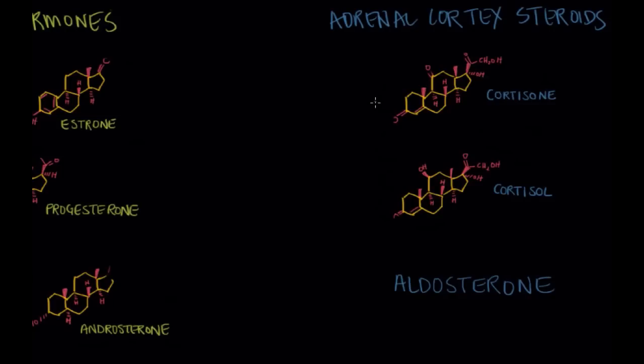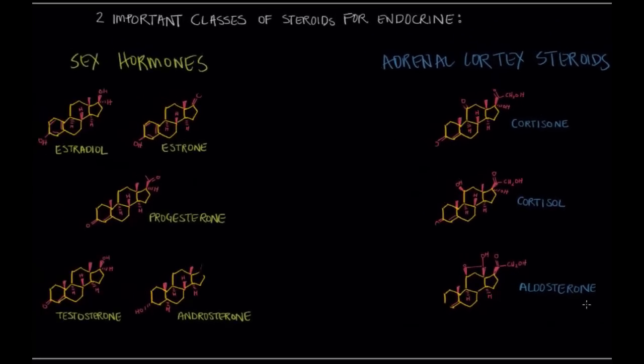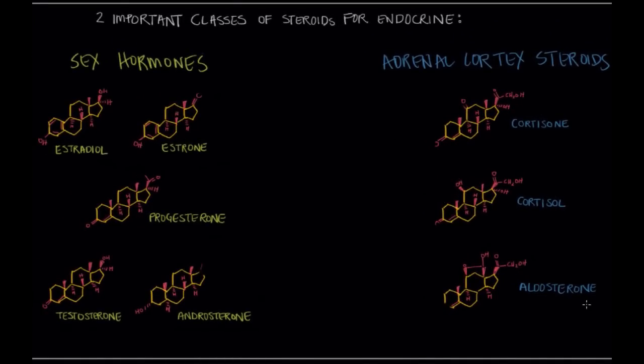And then we also have aldosterone. And aldosterone is one of the main hormones that regulates our body's blood pressure and the fluid volume. And so I hope all these images make steroids a little bit more familiar to you now that you've seen the classic backbone and you know how to make it.